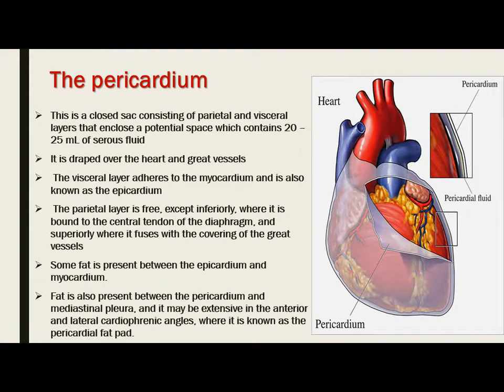The pericardium is a closed sac consisting of parietal and visceral layers that enclose a potential space containing 20 to 25 milliliters of serous fluid, draped over the heart and great vessels. The visceral layer adheres to the myocardium and is also known as the epicardium. The parietal layer is free, except inferiorly where it is bound to the central tendon of the diaphragm and superiorly where it fuses with the covering of the great vessels. Some fat is present between the pericardium and myocardium, increasing with age, and also between the pericardium and mediastinal pleura, which may be extensive in the anterior and lateral cardiophrenic angle — the pericardial fat pad.